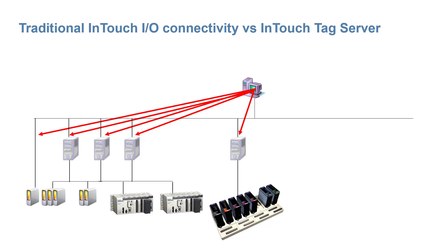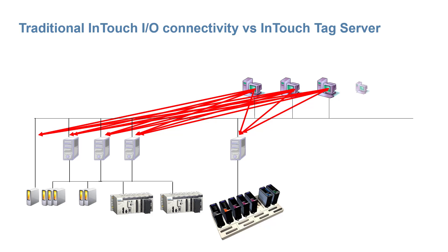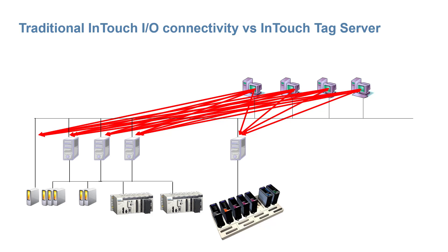Each visualization node requires at least one or more connections to each source of data. Adding additional operator stations means the demand may swamp older equipment, which may lack caching or queuing features for regulating additional demand. If a business grows from just a couple of workstations to an enterprise, it's possible even the plant floor will suffer. The network burden is one-to-many for every visualization node added.